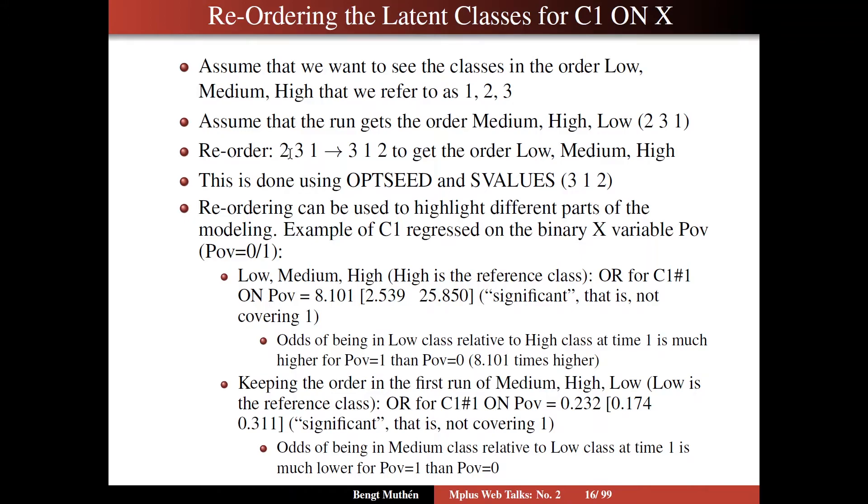That gives you the order low, medium, high. You probably prefer your own way of thinking about how to do this. Here's how I usually write it out when I reorder. This is done using OPTSEED from the first run and SVALUES, where you give this order 3, 1, 2, which is the order that you want. You can do this for one latent class variable, as I show here, or for several, as you would have in latent transition analysis. We're going to see examples of the case where you have several of them.